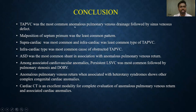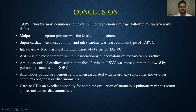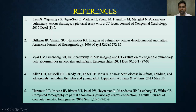Coming to the conclusion: TAPVC was the most common anomalous pulmonary venous drainage followed by sinus venosus defect, and malposition of septum primum was the least common pattern. Supracardiac was the most common and infracardiac was the least common type of TAPVC. Infracardiac TAPVC was the most common cause of obstructed TAPVC. ASD was the most common shunt. Among associated cardiovascular anomalies, persistent LSVC was the most common, followed by pulmonary stenosis and DORV. Anomalous pulmonary venous return when associated with heterotaxis syndrome shows other complex congenital cardiac anomalies. Cardiac CT is an excellent modality for complete evaluation of anomalous pulmonary venous return and associated cardiac anomalies.